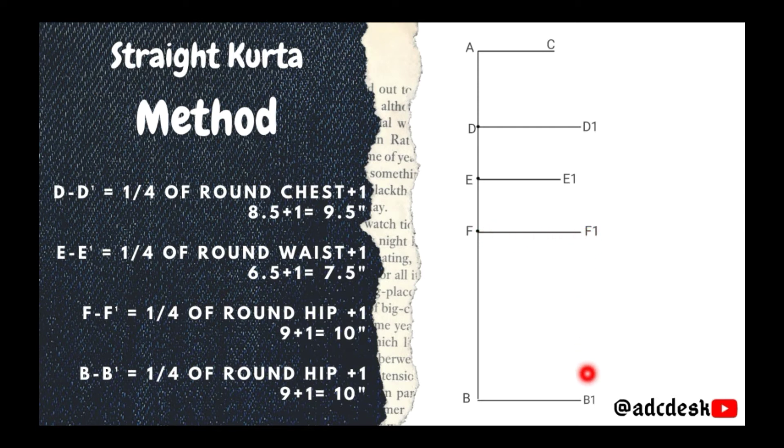If we want to make an A-line kurta, we can add two or three inches extra at the hemline and we will make an A-line kurta with the hip measurement. Right off the waistline, we draw a little diagonal line to make an A-line cut down.